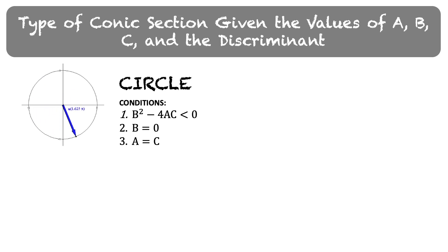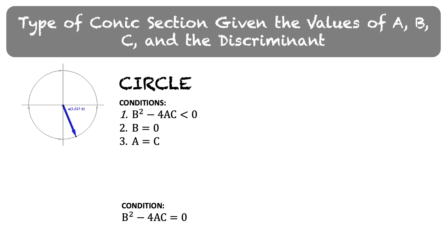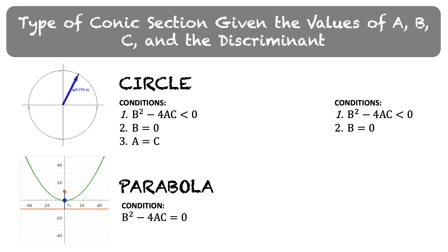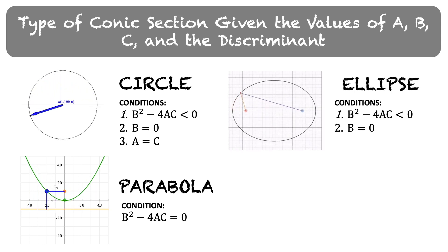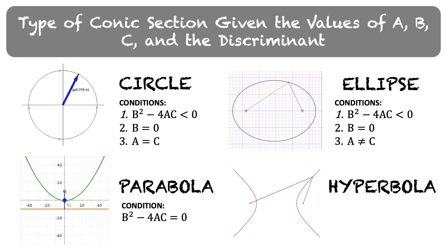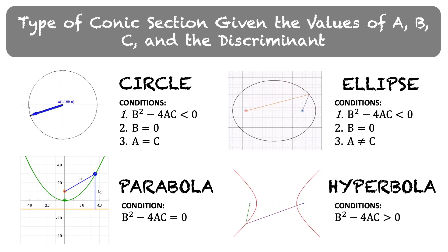Regardless of the numerical values of A, B, and C, for as long as they are real numbers, if B² minus 4AC is exactly equal to zero, the conic section is a parabola. The first two conditions for circle are also true for ellipse. However, A and C should not have similar numerical value, or A should not be equal to C. Finally, we will have a hyperbola if B² minus 4AC is greater than zero.